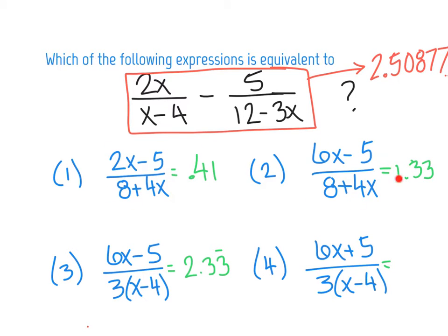Choice number two, I got 1.33, not a match. Eliminate that choice. Choice number three, I got 2.33 repeating, not a match. So we're kind of cutting it close here. When I did type in the fifth choice, I got 2.50877. Winner, chicken dinner. Here is my equivalent answer.